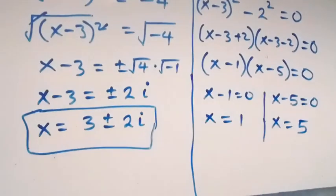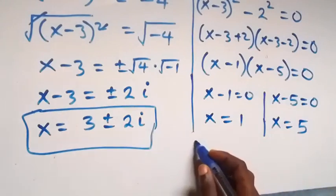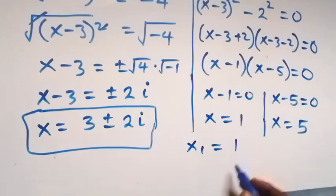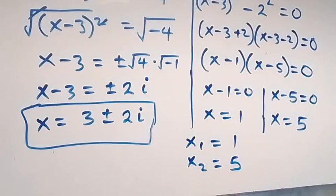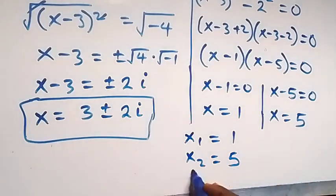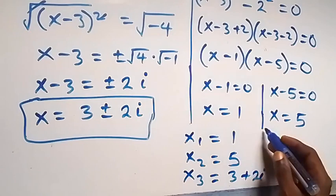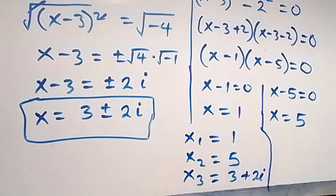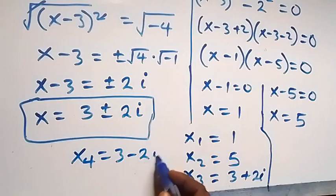Now the solutions to this problem are: x1 equals 1, x2 equals 5 — the real solutions — then x3 equals 3 plus 2i, and x4 equals 3 minus 2i. So we have these four solutions to the given problem.